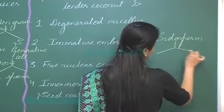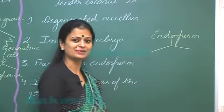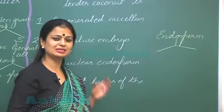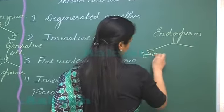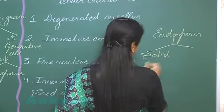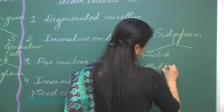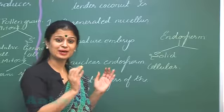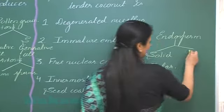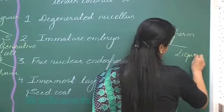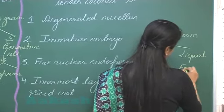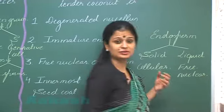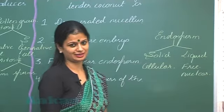In the coconut, there is presence of two types of the endosperm. The outer part of the endosperm is solid. This is cellular. The inner part of the endosperm is liquid and it is free nuclear. The thousands of the nuclei, they are present in this endosperm.